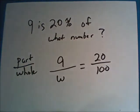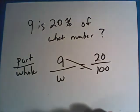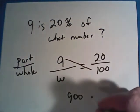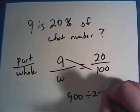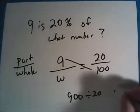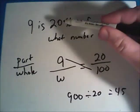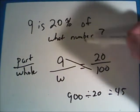And just like last time, cross multiply. So 9 times 100 giving us 900. And then divide by the 20. So 900 divided by 20 should get us 45. Therefore 9 is 20% of 45.